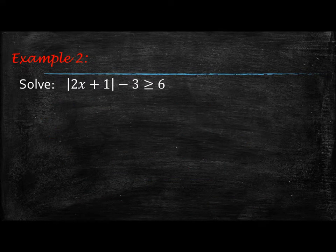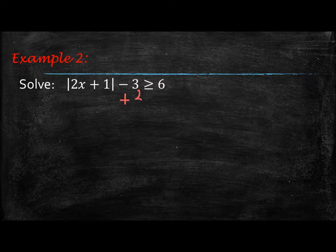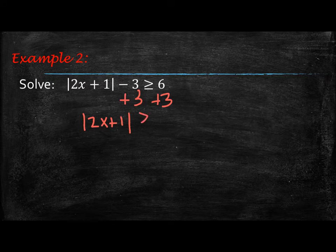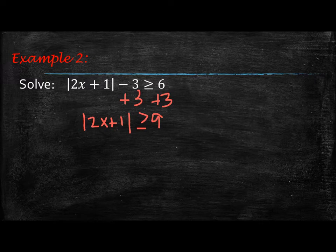Alright, so let's look at the next example. Our first step is we need to isolate the absolute value, so we're going to add 3 to both sides. That gives us the absolute value of 2x plus 1, greater than or equal to 9. Now we're going to set it to the positive and the negative, splitting it up: 2x plus 1 is greater than or equal to 9.